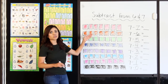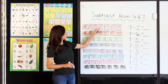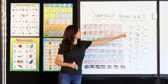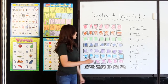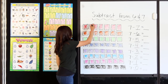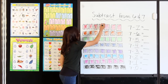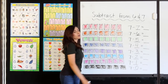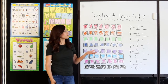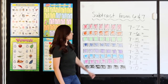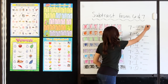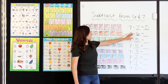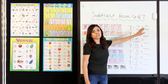I have 7 red squares — 1, 2, 3, 4, 5, 6, 7. I'm going to go ahead and take away 7: 1, 2, 3, 4, 5, 6, 7. How many do I have left? 0. 7 minus 7 equals 0. And remember the rule: a number minus all of that number equals 0.